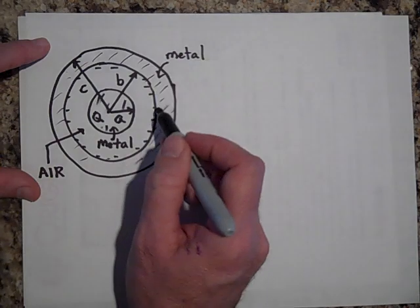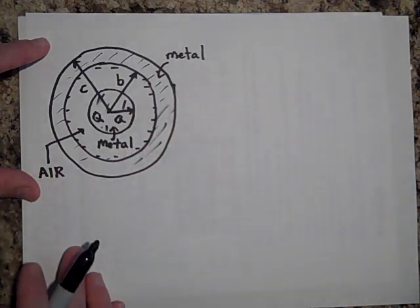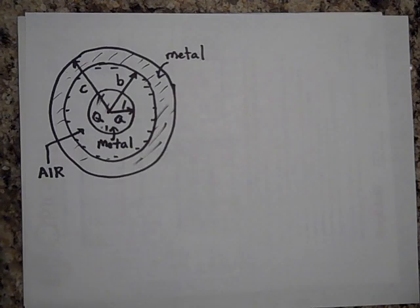So again, what I did was I grounded the outer part and that caused there to be no charge here. There's no charge on the outer part, but on the inner side, there's still the negatives that are being pulled in by the positive Q.